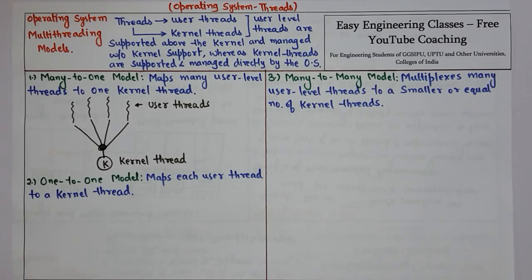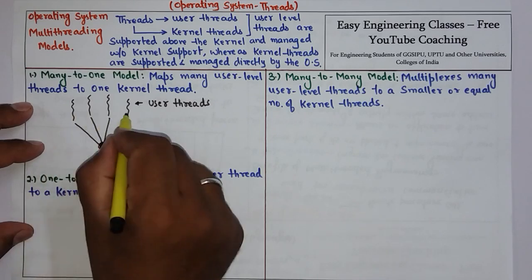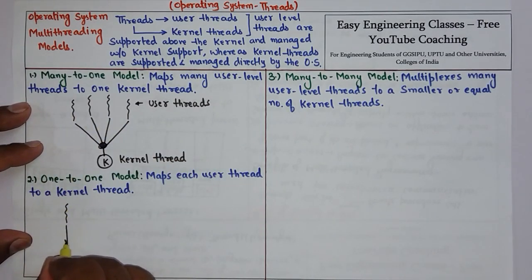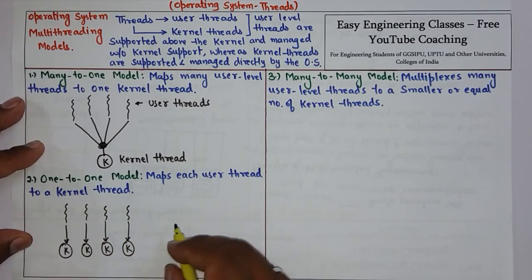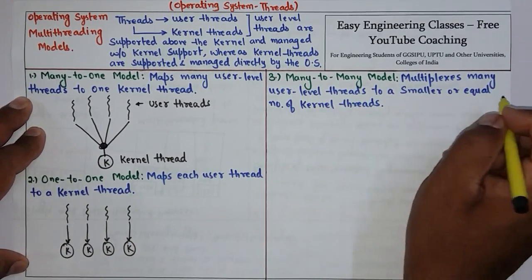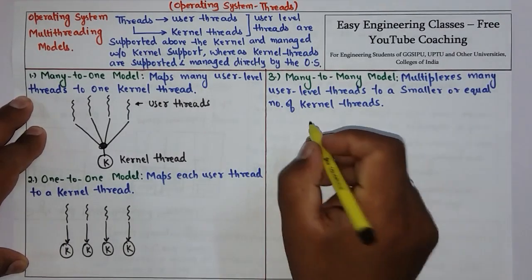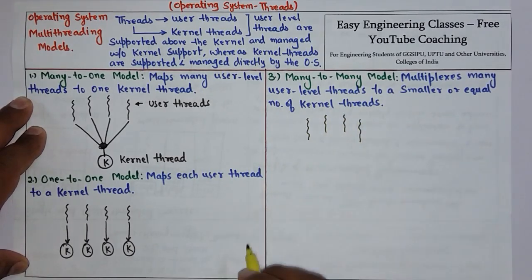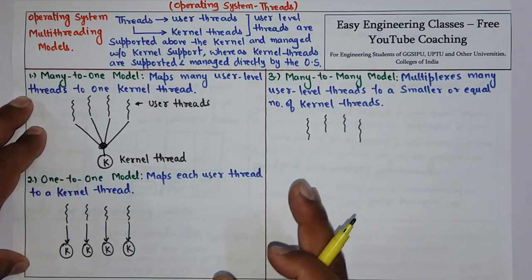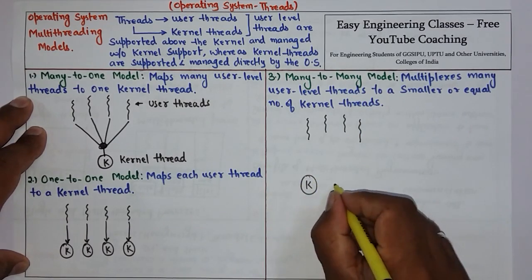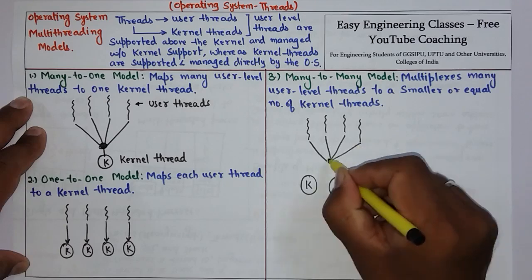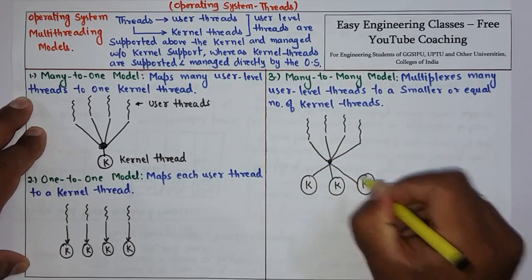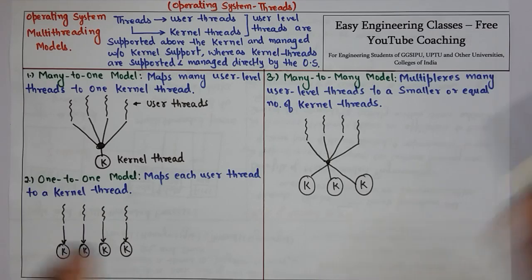Then we have the one-to-one model, where the mapping is done between each user thread and one kernel thread. So if we have four user threads, for each of those threads we will have one kernel thread. Then we have the many-to-many model, which multiplexes many user level threads to a smaller or equal number of kernel threads. For example, four user threads can be managed by three kernel threads — that is your many-to-many model.